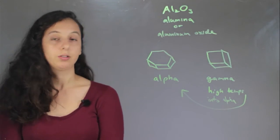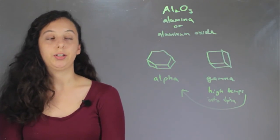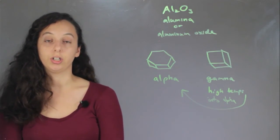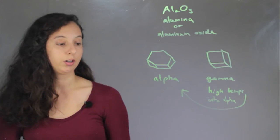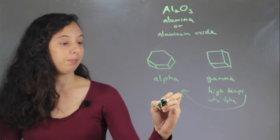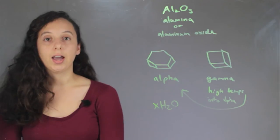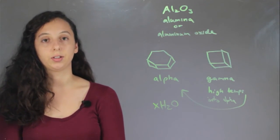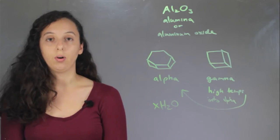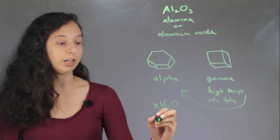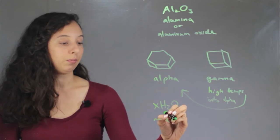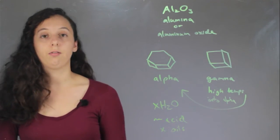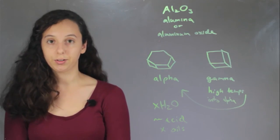Now, solubility. It turns out that both alpha and gamma have extremely, extremely low to no solubility in water, and that's for both of them. They have extremely low solubility in most things, including organic oils. And both of them will dissolve partially in acid. But overall, alumina of all types is very insoluble.